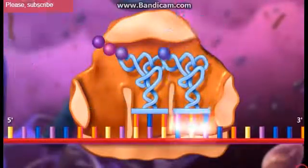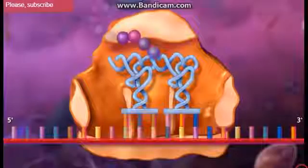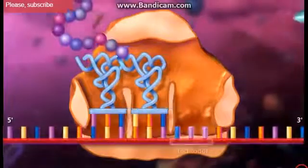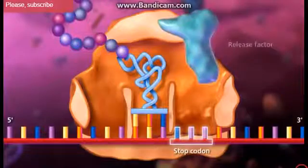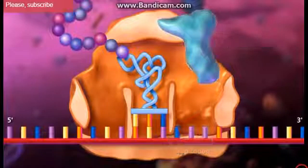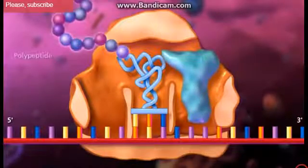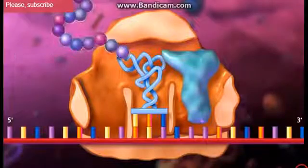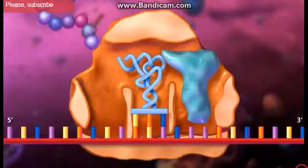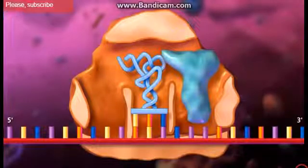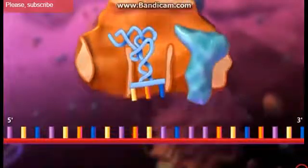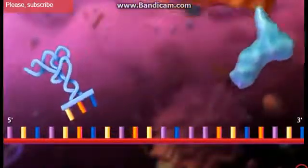Elongation will continue until a stop codon is reached. A release factor binds to the A site at a stop codon, and the polypeptide is released from the transfer RNA in the P site. The entire complex dissociates and can reassemble to begin the process again at initiation.